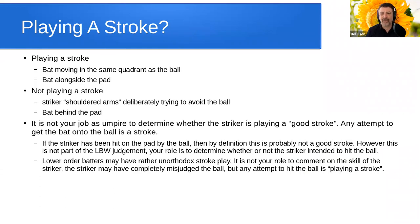Let's tackle that last point first, because this is an easy decision: is the striker playing a stroke? The decision is whether the striker has made an attempt to hit the ball. The striker is playing a stroke if they have the bat moving in the same quadrant as the ball, or if they've placed the pad down the pitch and placed the bat alongside the pad. Whether the bat is moving or not, if they've put the bat out in front of where they believe the ball is going, they are playing a stroke.